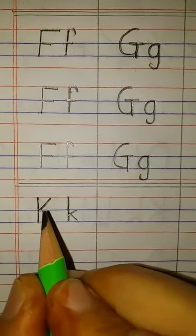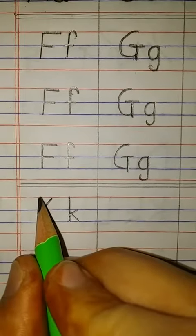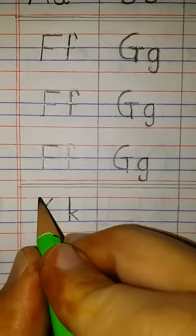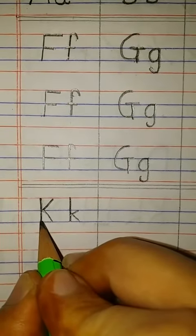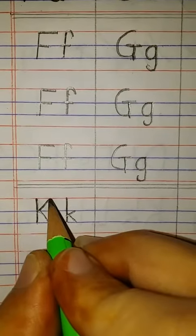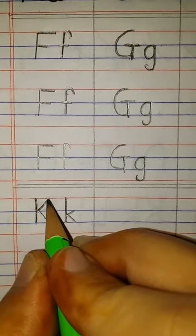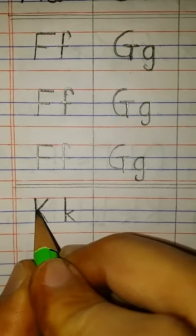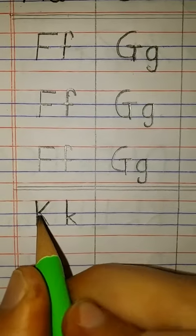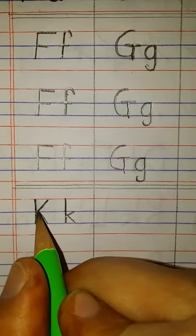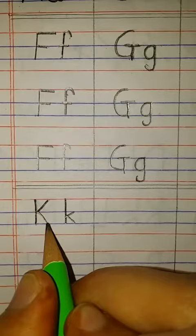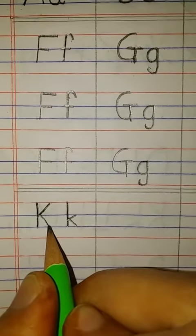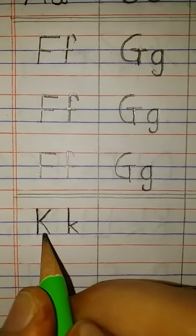For capital K, you have to draw a standing line from the red line. Then you have to draw a slanting line till the first blue line. And then from the first blue line, you have to draw a slanting line touching the second blue line. So this is the capital letter K.